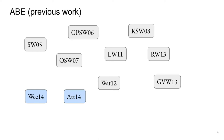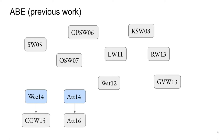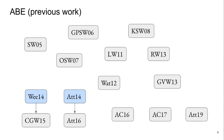Analyzing the security of these encodings is much simpler. In the framework of Wee they define predicate encodings, and in the framework of Attrapadung they define pair encodings. This is the primitive we study in this work. Both works were generalized to the prime order setting, and there are other subsequent works about pair codings and predicate encodings that refine these notions. We are going to focus on the framework started by Attrapadung about pair encodings, which is supposed to be the most expressive one.